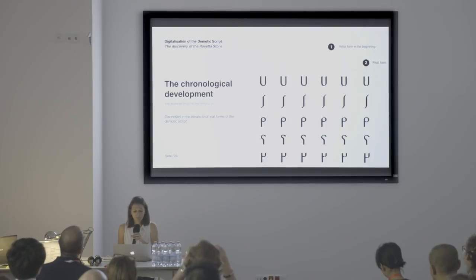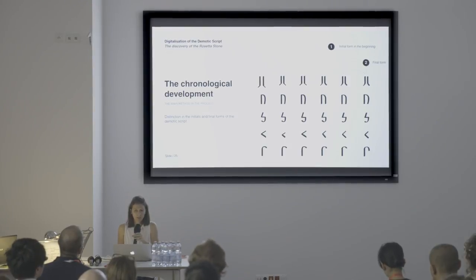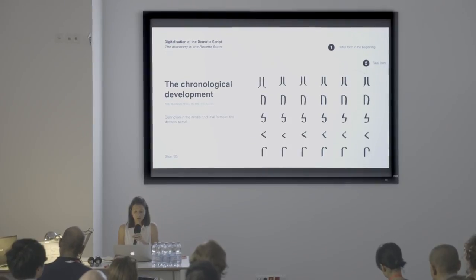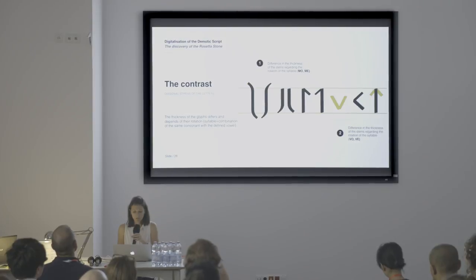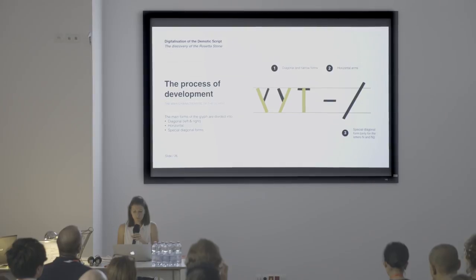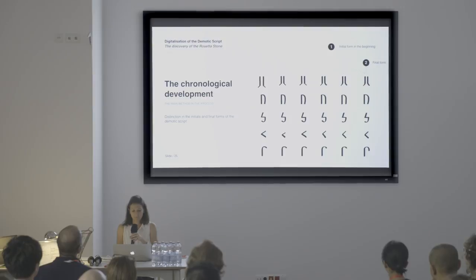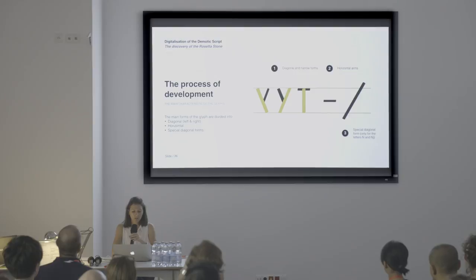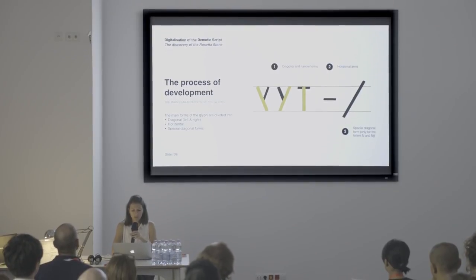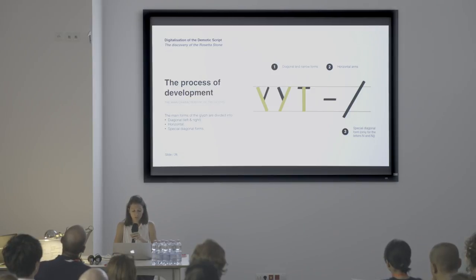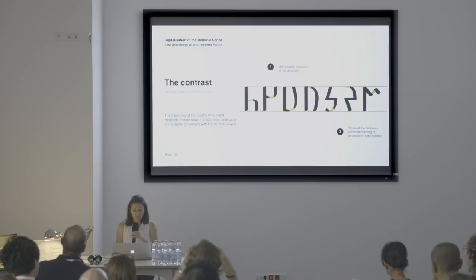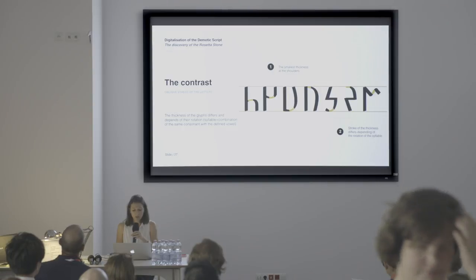Here you can see the whole process of development — how the glyphs were developing and changing. In the beginning they were narrow and straight. The main forms of the glyphs are divided into three: diagonal left and right, horizontal stems, and one slanting line. The original form had this diagonal line stressed at 45 degrees, but for better legibility of the digitalized script it was decided that this line should be stressed at only 15 degrees. Here you can see the difference in thickness of all oblique forms, because of the mirroring and rotating of the syllables — the highlighted parts at the shoulders have the smallest thickness.